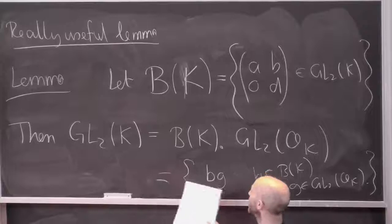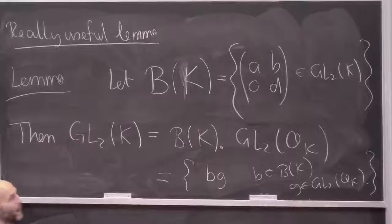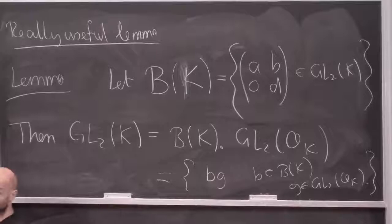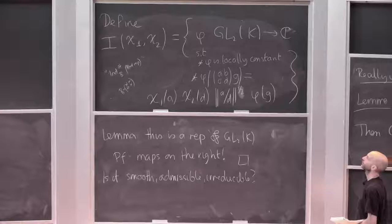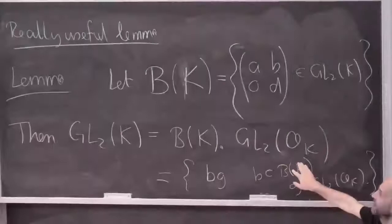I'm saying that every two-by-two matrix is an upper triangular matrix times a matrix with integer entries. This is nice to know because if I've got a locally constant function on a compact set like GL2(OK), it's only going to take finitely many values — because it's locally constant, hence continuous with the discrete topology on ℂ. A continuous function on a compact set has compact image, and a compact subset of ℂ with the discrete topology is finite.